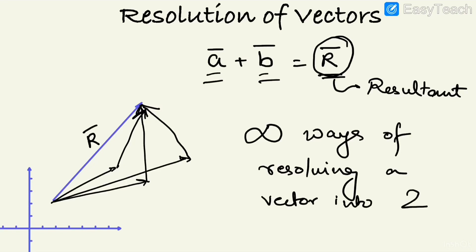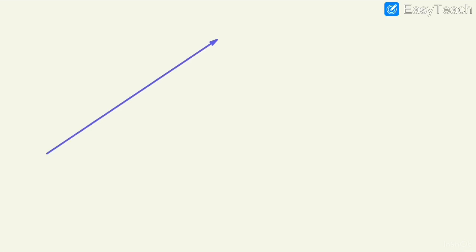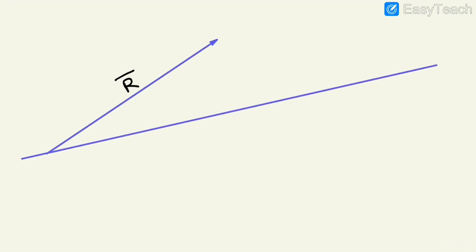But to restrict it, suppose we are told that this is the resultant vector R, and you have to find such two components which are along a specified direction and another specified direction. The directions are given as unit vectors â-cap and b̂-cap. So you are told to resolve the resultant vector R along these two directions.